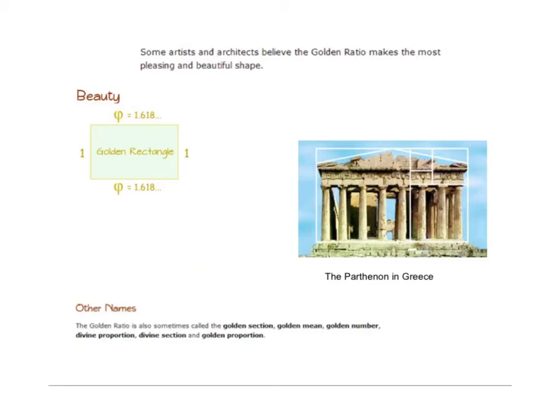The Parthenon in Greece has been built with this ratio in mind. Most of the time when you ask someone to draw a rectangle, they'll draw one this shape. And this is the golden rectangle. And we actually approximate it. It seems to be very symmetrical or pleasing to the human eye or what we like.